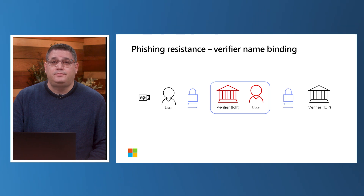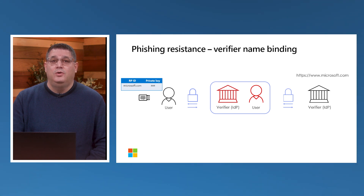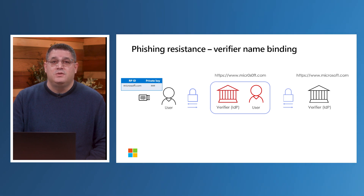Let's go over the flow. The user previously registered the FIDO security key with the legitimate site. In our case, Microsoft.com is indicated in the lookup table stored on the FIDO security key. The unwary user arrives at the imposter site that immediately starts a session with the legitimate site and relays the response to our user. The unwary user sees the exact authentication UI from the legitimate site and is prompted to use their FIDO security key.